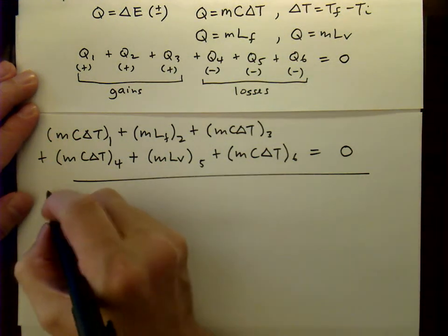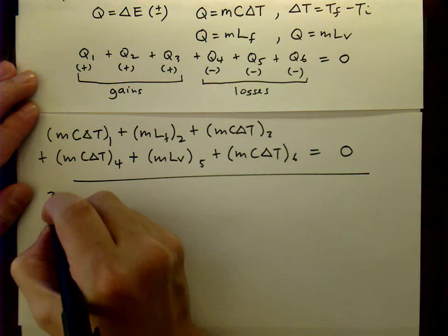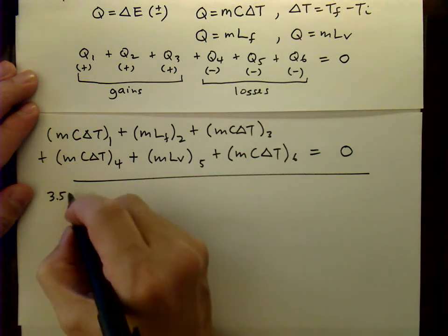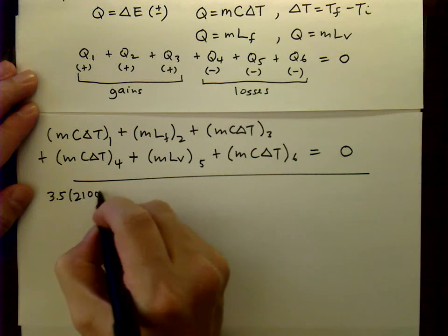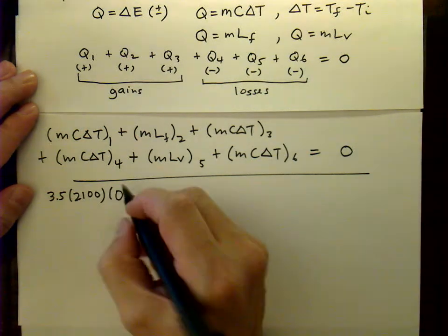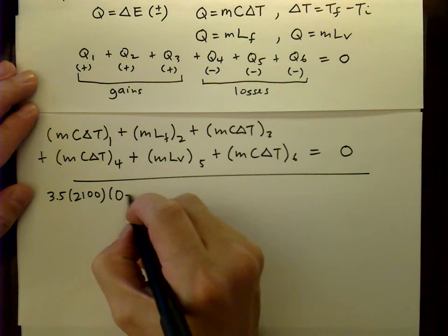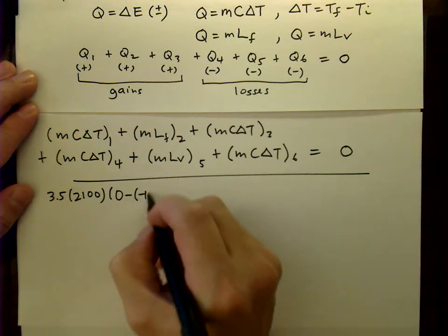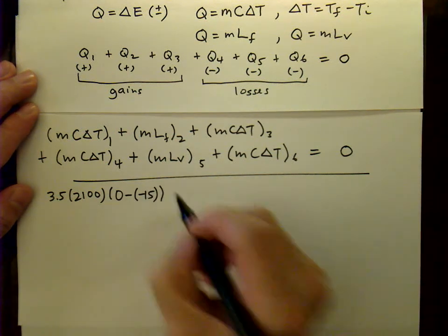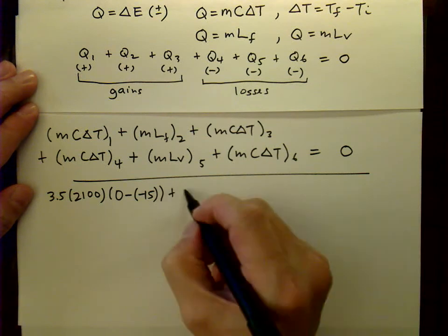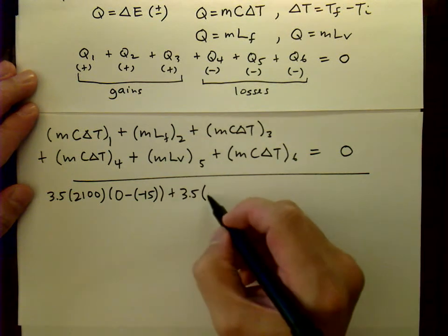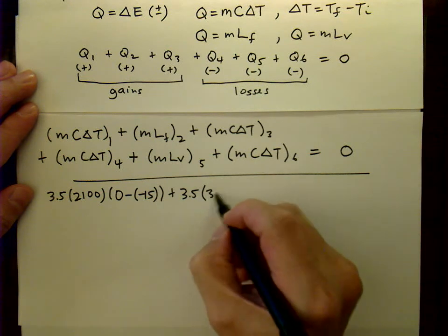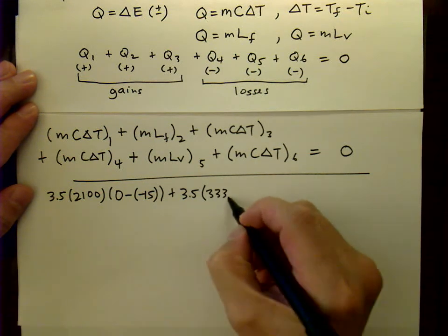If we substitute in values for the ice, we have 3.5 kilograms of ice times the heat capacity of ice times the change in temperature. Now, the final temperature is zero degrees C, and we're going to subtract the negative 15 degrees C. And of course, we have the latent heat, mass times the latent heat of melting, or fusion.